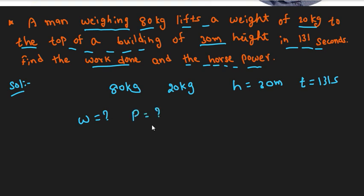The total mass is the mass of the person plus mass of the weight, so 80 kg plus 20 kg equals 100 kilograms total.